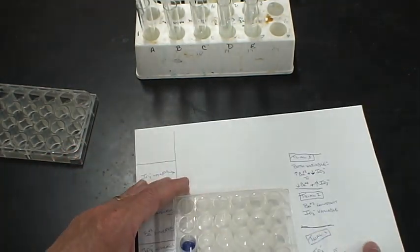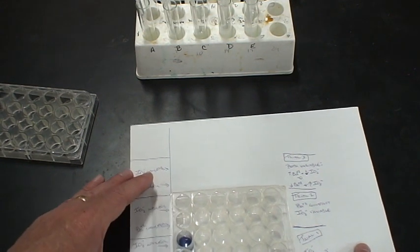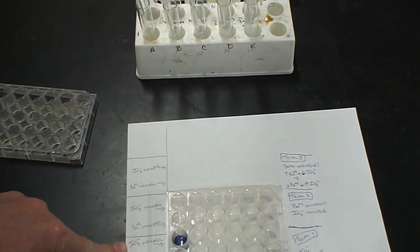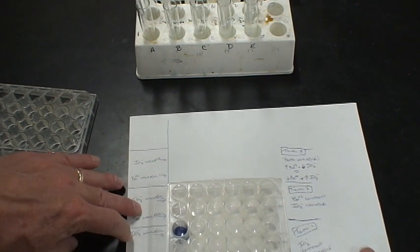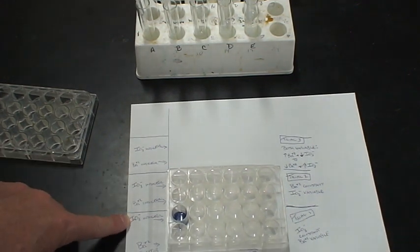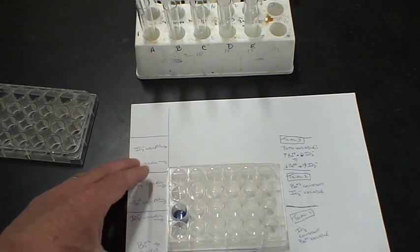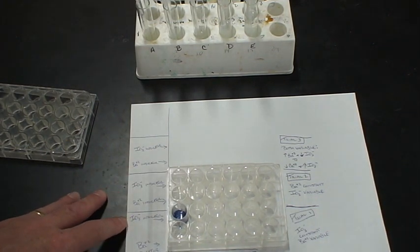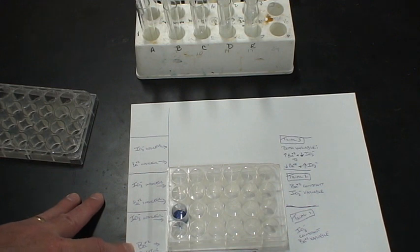So the question is, what does this tell us? Remember, this is the row that indicates for iodate. So the question is which test tube contained leftover, or what we call excess, iodate? This is the row that indicates leftover, or excess, barium.